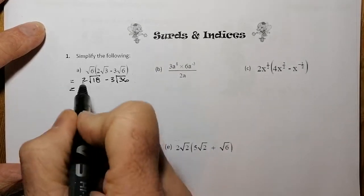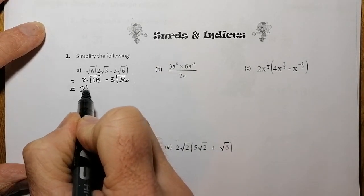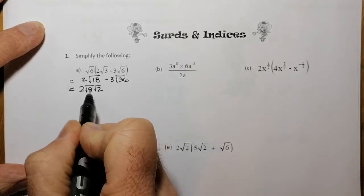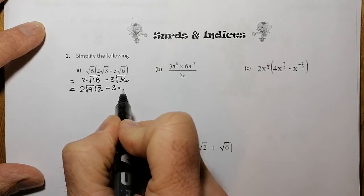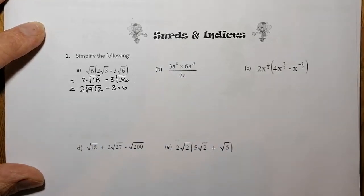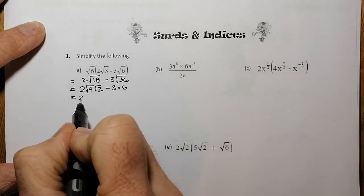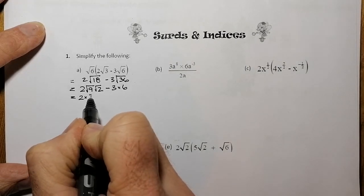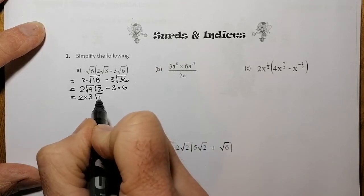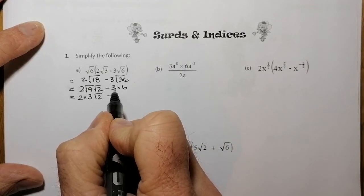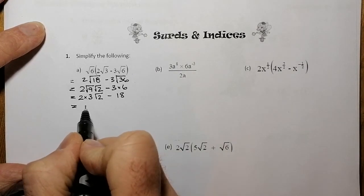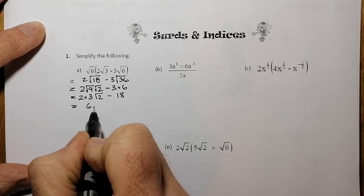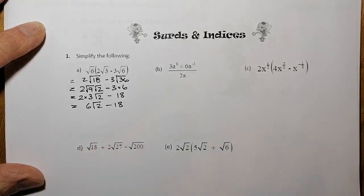Now I'll simplify. Root 18 gives me root 9 and root 2, with 9 being the square number. And 3 root 36 — the square root of 36 is just 6, so that's 3 times 6. Simplifying further: 2 times 3 from root 9, times root 2, subtract 3 times 6. So 2 times 3 is 6, giving me 6 root 2 subtract 18. That's my final answer.